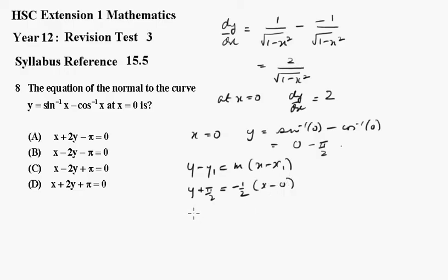So multiplying throughout by 2, we get 2y plus pi equals minus x. So we get x plus 2y plus pi equals 0. So that's the equation, which is d.